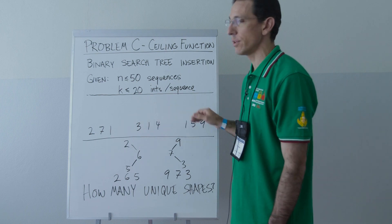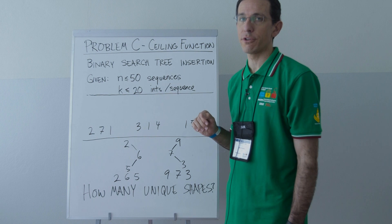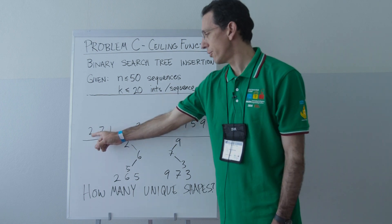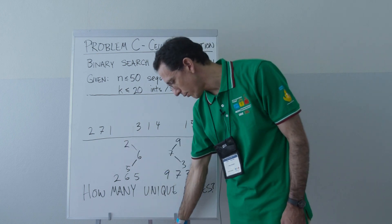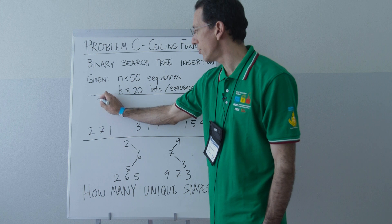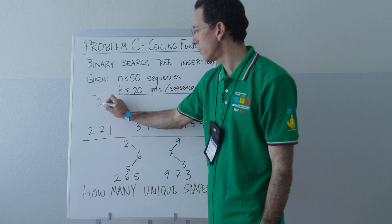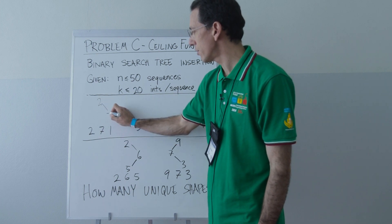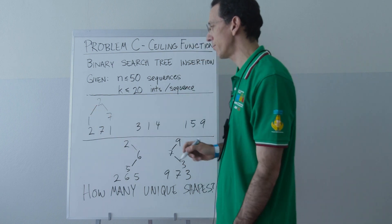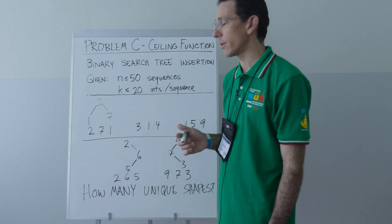For each of these sequences, the goal is to build a binary search tree by inserting the numbers in order. So insert 2, then insert 7, then insert 1. So if we do this, we insert 2 at the root, then we insert 7 to its right, and we insert 1 to the left of 2, and we get this binary search tree.